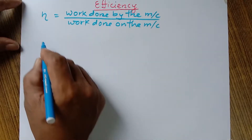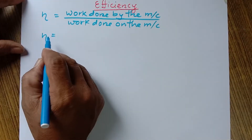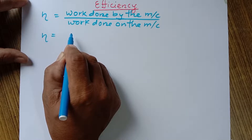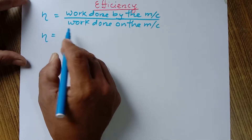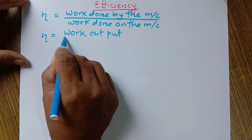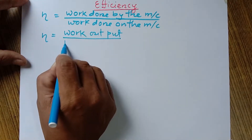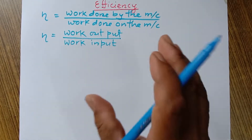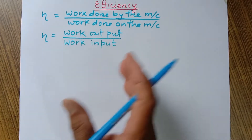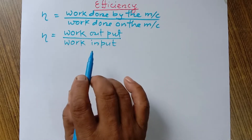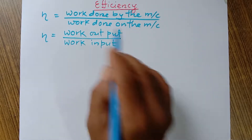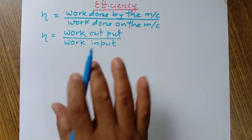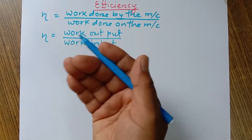There is another method also. We can say efficiency like this: it is the ratio of work output to the work input. The ratio of work output to the work input in a simple machine is called the efficiency of that simple machine.